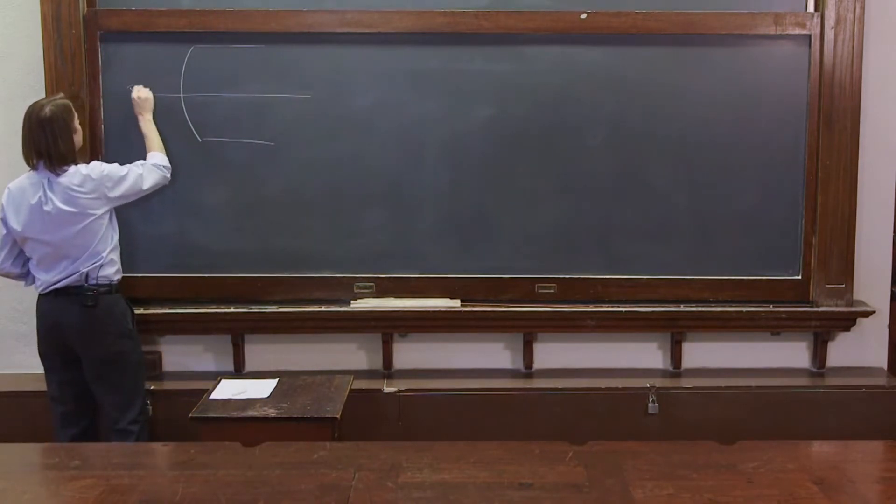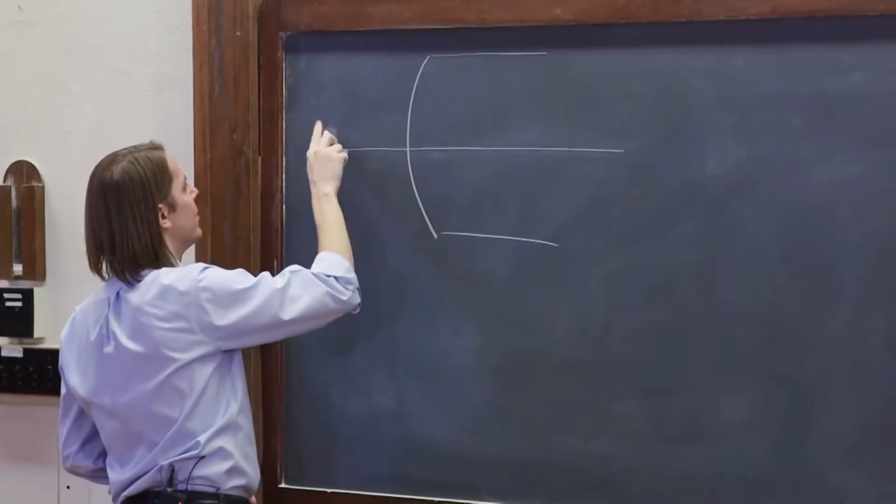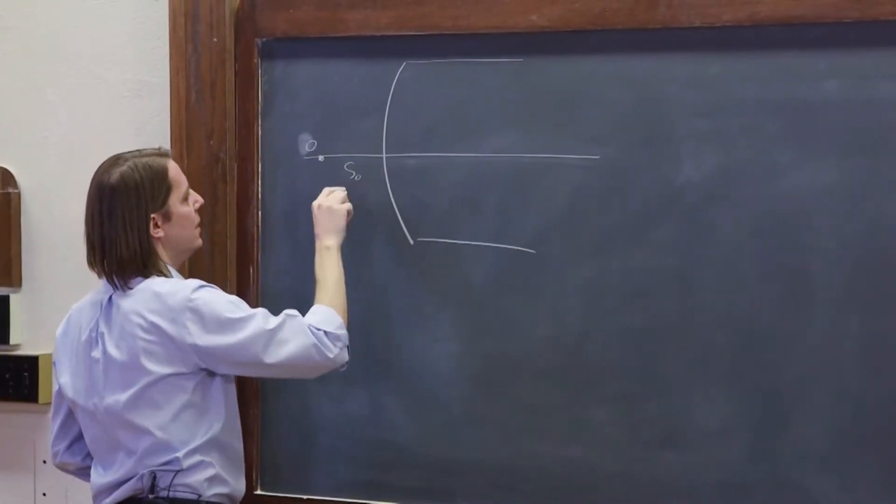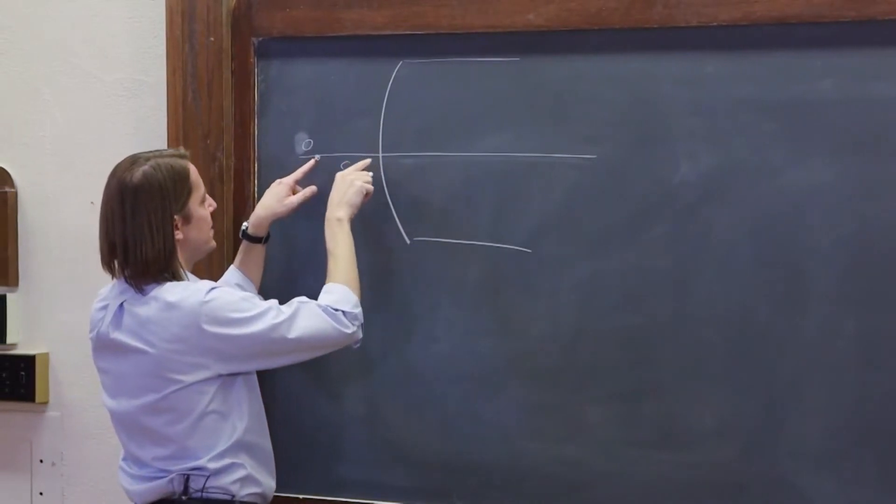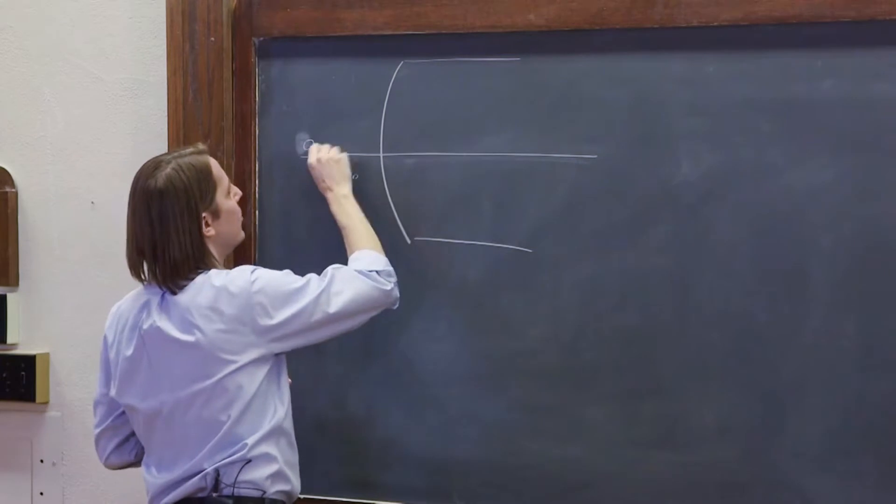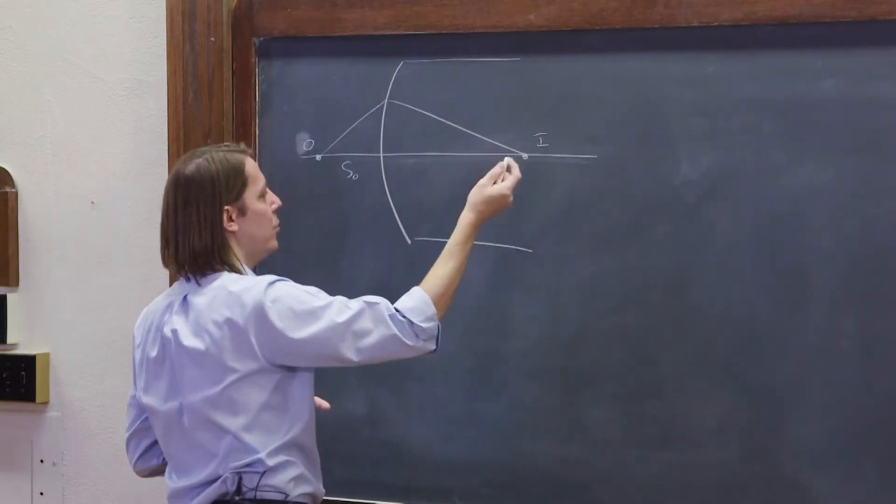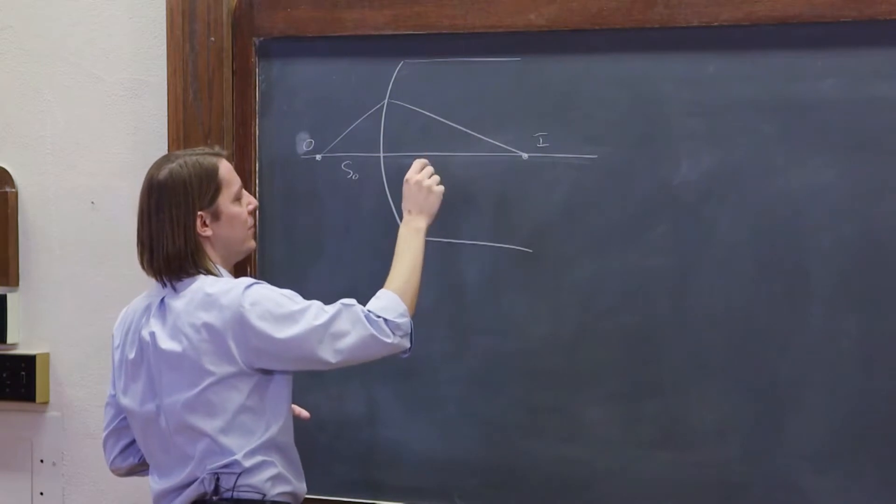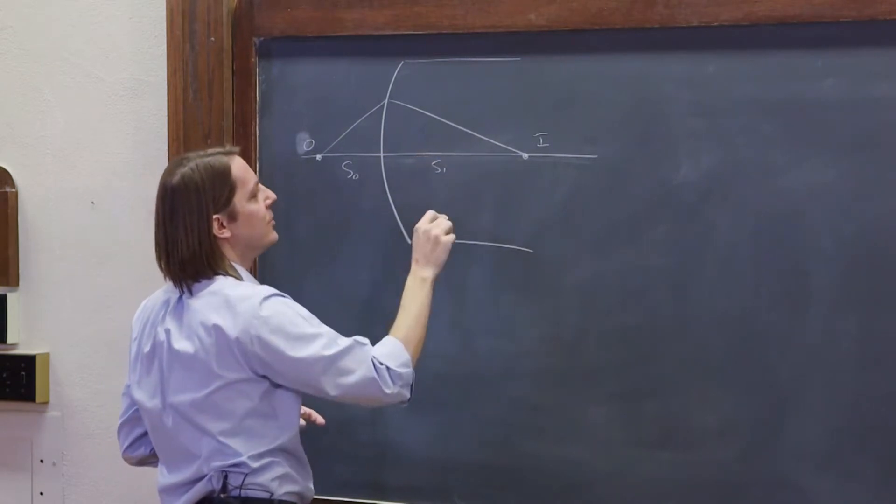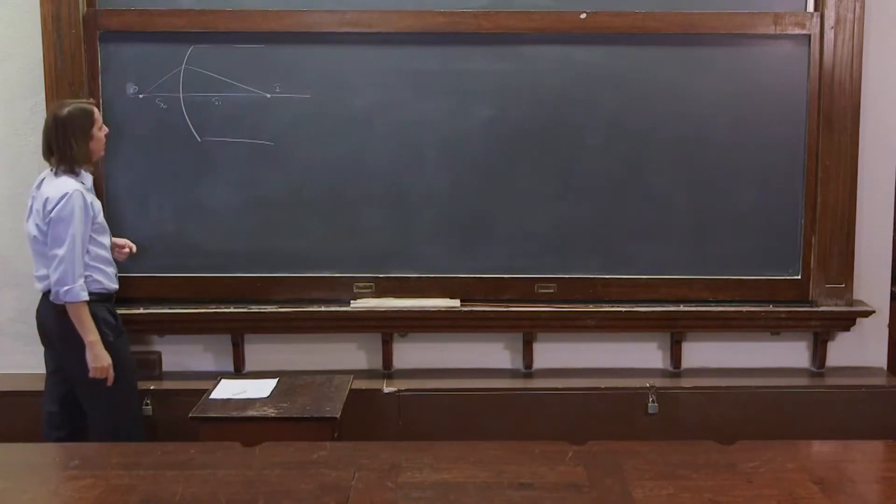And remember we had our image out here. I'm sorry, our object out here. And it's at the object distance. That's really just the distance from the object to the front of the glass. And that ray is going to come and focus to a point where it will ultimately create an image when it's a lens. And that's at the image distance, which is from this point to the front of the glass.